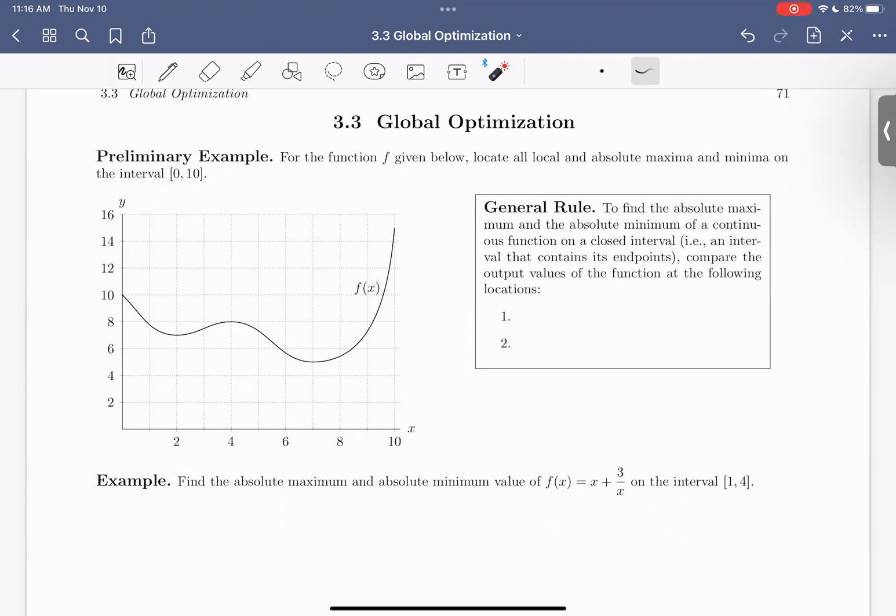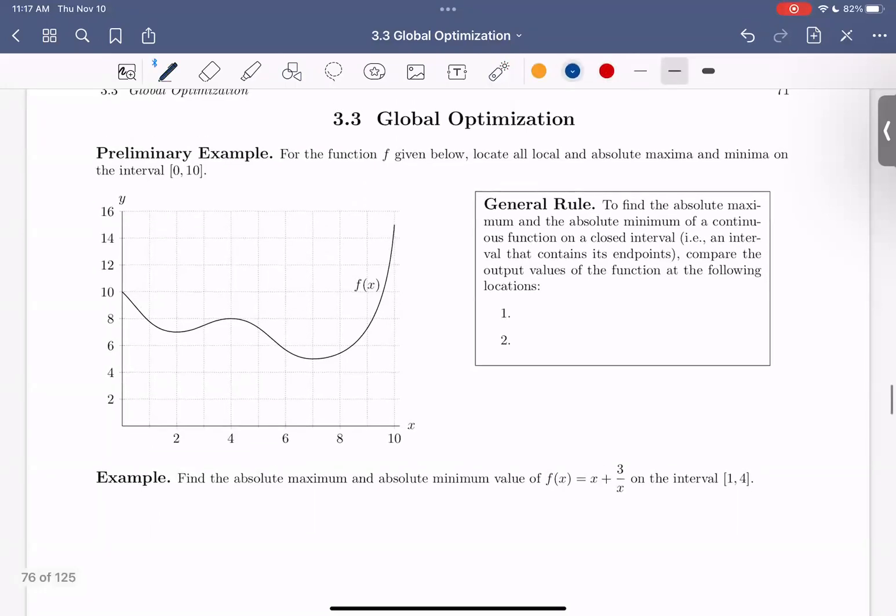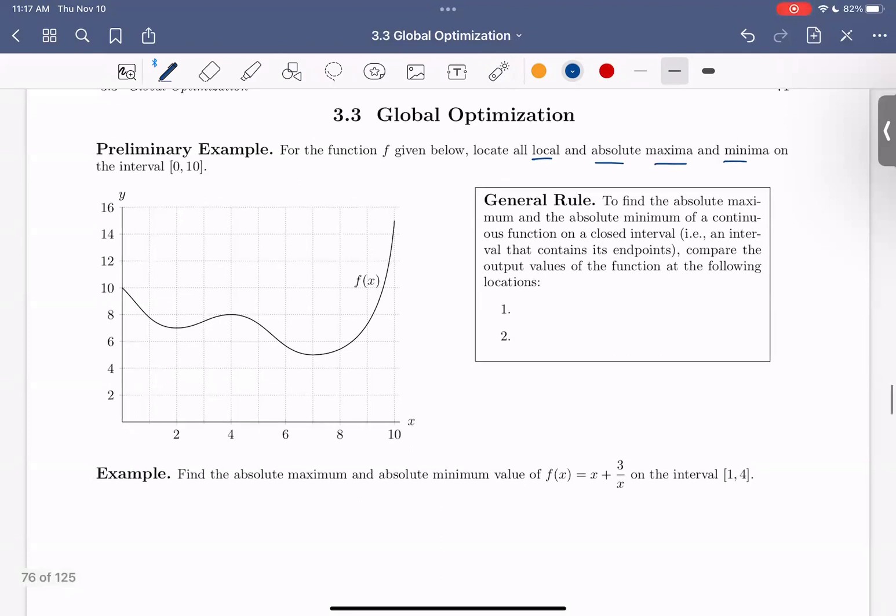That's a little bit about why we care. Let's get into how we find such optimal or maximum minimum locations. In our preliminary example here, we have this graph, and again, we want to find the local and absolute max and min. Why don't you pause the video and see if you can first find these local minimums and absolute minimums.